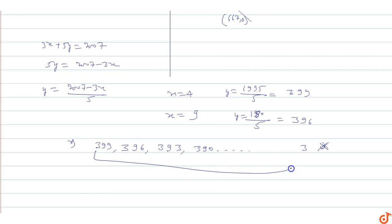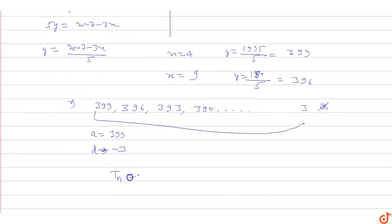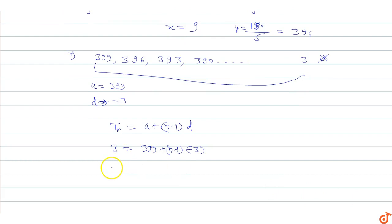We now find the number of terms in the AP: first term a = 399, common difference d = -3, last term = 3. Using the nth term formula: 3 = 399 + (n-1)(-3), so 3 - 399 = -3(n-1), giving -396 = -3(n-1), so n - 1 = 132, thus n = 133.